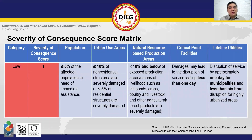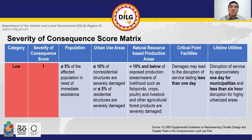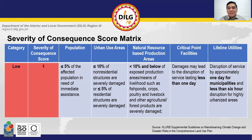For low severity of consequence, the range for population is less than 5%. For urban use areas, it is less than 10% of non-residential structures, or less than 5% of residential structures. For natural resource-based production areas, it is less than 10% for exposed production areas or means of livelihood. For critical point facilities, the disruption is less than a day. And for lifeline utilities, disruption of service by approximately one day for municipalities, and less than six hours for highly urbanized areas.